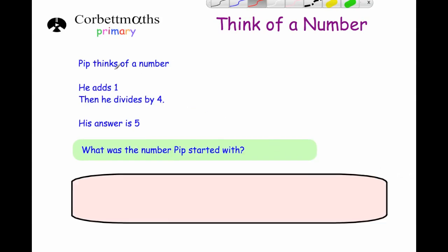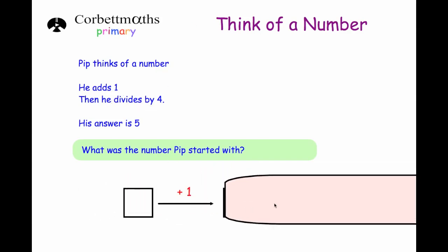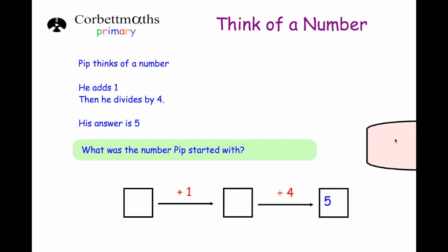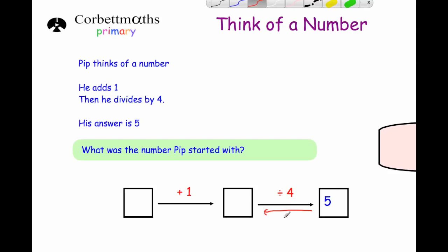The next question: Pip thinks of a number, he adds one and then divides by four, and his answer is five — what number did Pip start with? Working backwards: the last thing Pip did was divide by four, so we first times by four. Five times four is twenty. Then Pip added one to begin with, so we do the opposite: minus one. Twenty minus one is nineteen. If we test it: nineteen plus one is twenty, divided by four is five.